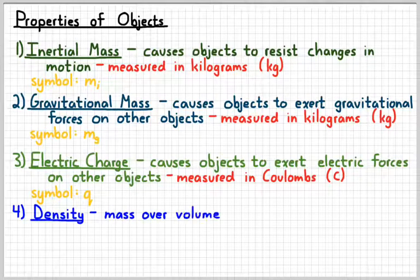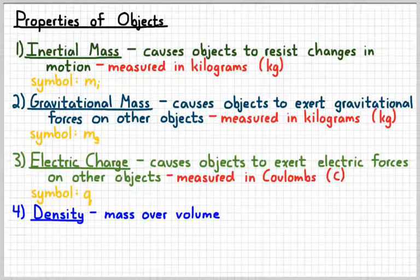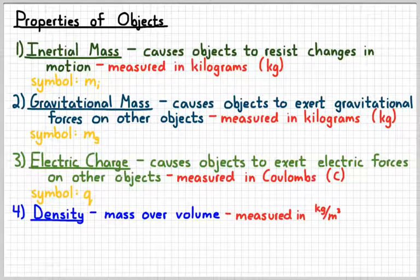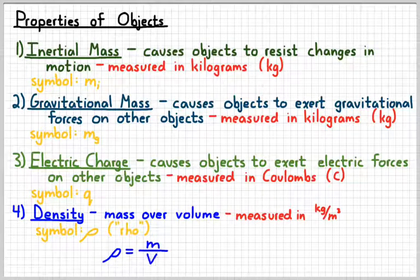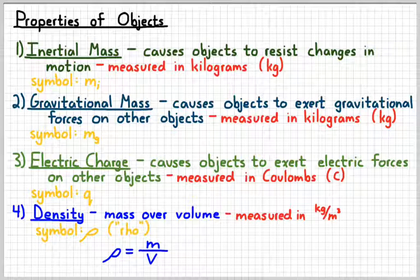And then finally, the fourth important property we need to review is that called density. Remember from chemistry that density is simply mass divided by volume. In physics, because we want to keep everything in terms of kilograms and meters, we're going to measure density in a unit called kilogram per cubic meter. The symbol for density is the Greek letter rho. And we can write a simple equation, like density equals mass over volume. So those four properties, along with a few others we'll learn about later on, define how objects interact with each other and what they do when they interact with each other.